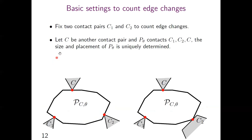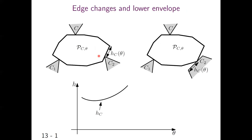Suppose that there is another contact pair C. When P is rotated by a fixed angle, the place and size of P is uniquely determined, satisfying three contact pairs C1, C2, and C. We define a function h_C as the length slope in the following figures. The definition of h_C differs by the type of contact pair C2.